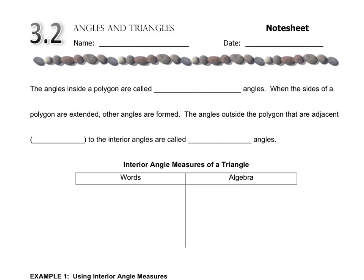Today we're going to discuss angles and triangles. The angles inside a polygon are called interior angles. When the sides of the polygon are extended, other angles are formed. Angles outside the polygon that are adjacent, which means next to the interior angles, are called exterior angles.